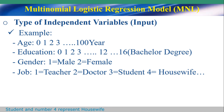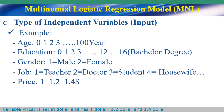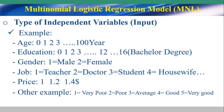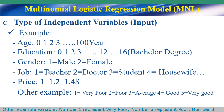Variable Price is set in dollars. Number 2 represents poor, number 3 represents average, number 4 represents good, and number 5 represents very good.